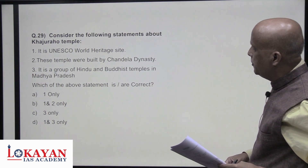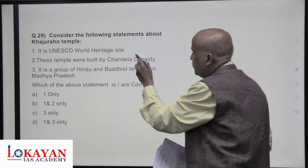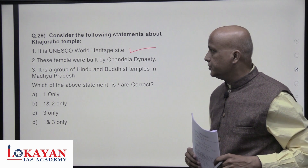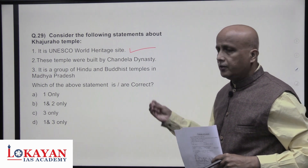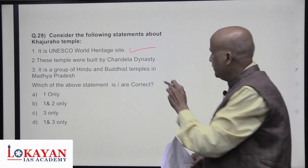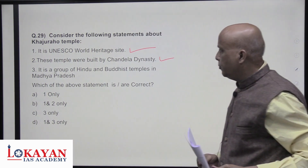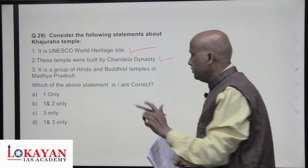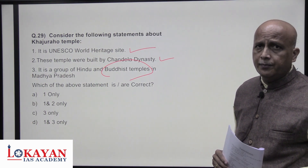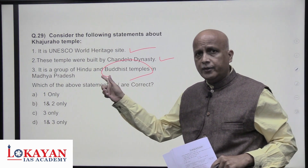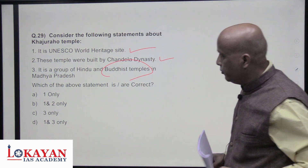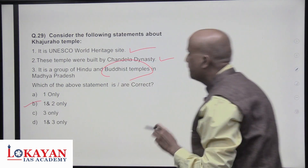Khajuraho temple — Chandela rulers of Madhya Pradesh. Date trees (khajur) gave the site its name. These are a group of Hindu and Jain temples — by this time Buddhism had lost ground, so there are no Buddhist temples there. Among Hindus there are Vaishnava and Shaivite temples. Statements one and two are correct only — answer is B.